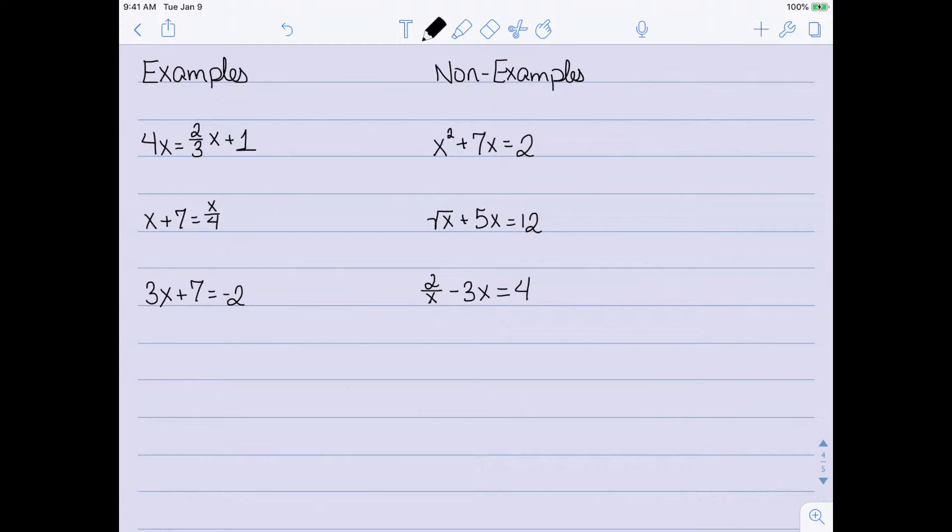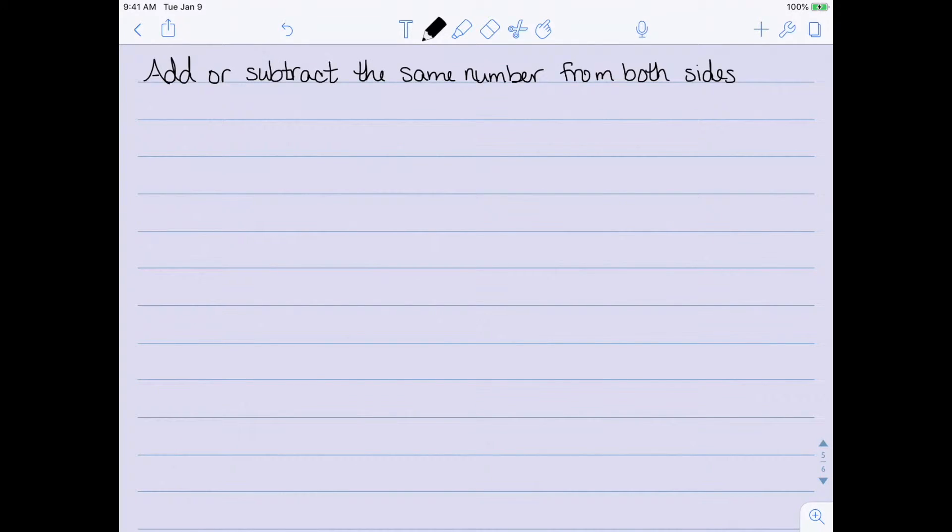So let's look at how to solve these. When solving linear equations, there are really two main rules. The first rule is that we can add or subtract the same number from both sides of the equation. We can add the same number to both sides of the equal sign or subtract the same number from both sides.